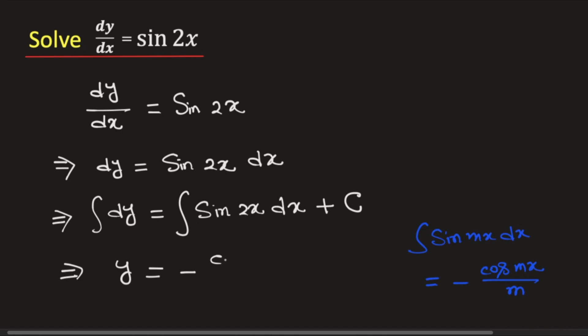this will be equal to negative cos 2x divided by 2 plus the integration constant C. So this is the solution of the given differential equation and this is our final answer.